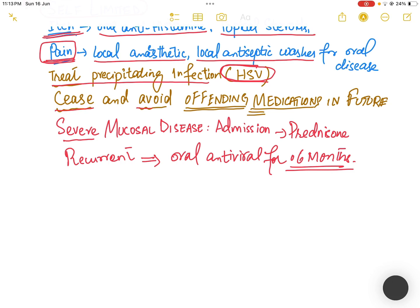Cease and avoid offending medications in the future. For severe mucosal disease, it needs admission with medication, and prednisone is given in most cases. For recurrent disease, management is required.